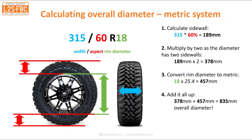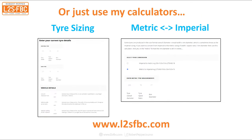Then add it all up: 378 + 457 = 835mm overall diameter. We don't talk about overall diameters in millimetres though — we use inches — so divide by 25.4: 835 ÷ 25.4 gives us a 33-inch tyre. If that sounds complicated, visit my website l2sfbc.com where you'll find two tyre calculators: one for tyre sizing with speedo change information, and another for converting between metric and imperial sizes.